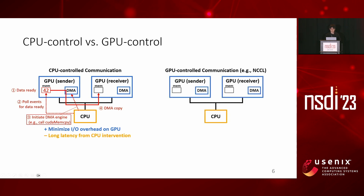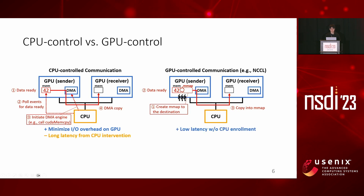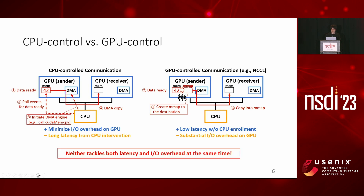On the other hand, in GPU-controlled communication such as NCCL, we initially create a memory map to the receiver GPU on the sender GPU's address space. When the data is ready at runtime, GPU threads will copy the data to the memory map, which will move the data to the receiver GPU. This design can achieve low latency because it bypasses the CPU during runtime operations. However, it suffers from substantial I/O overhead on GPU because it uses GPU threads for data copy. In short, neither approach tackles both latency and I/O overhead at the same time.